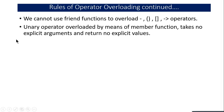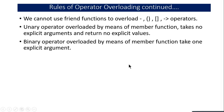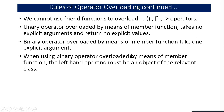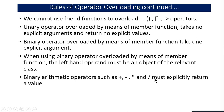For unary operator overloading — where only one operand is used — the function takes no explicit argument and has no explicit return type. For binary operator overloading — addition, subtraction, or comparison of two values — you must pass one explicit argument. When using binary operator overloading via member functions, the left-hand operand must be an object of the relevant class. For example, with A1 plus A2, A1 must be the user-defined type. Binary arithmetic operators like plus, minus, and multiply must explicitly return a value.